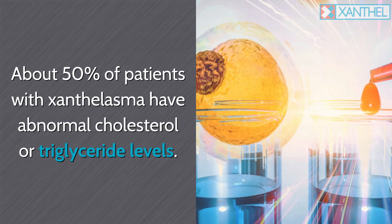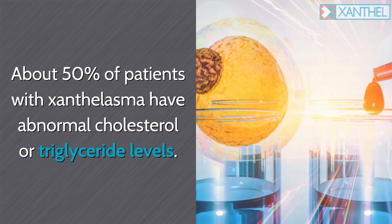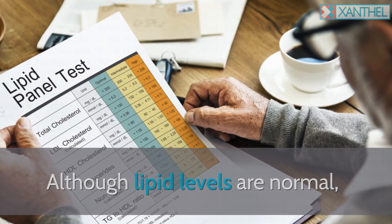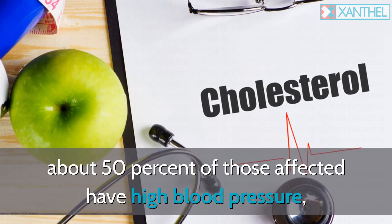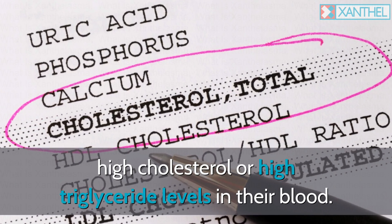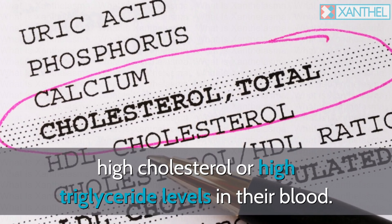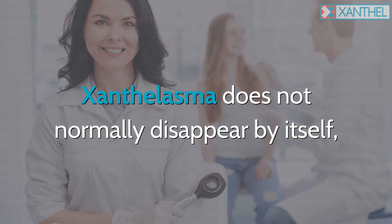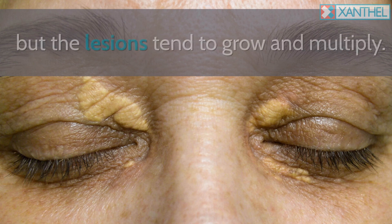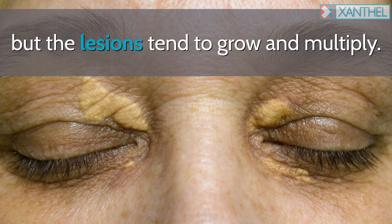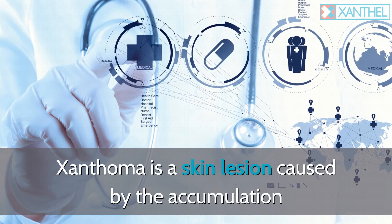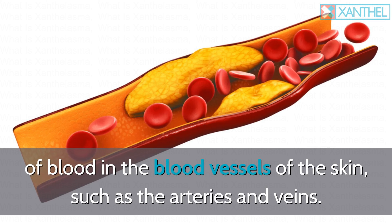These lesions have been associated with hypothyroidism, cirrhosis, and nephrotic syndrome. About 50% of patients with xanthelasma have abnormal cholesterol or triglyceride levels. Xanthelasma does not normally disappear by itself — the lesions tend to grow and multiply.